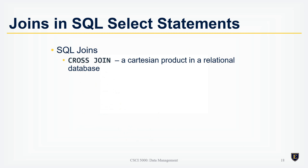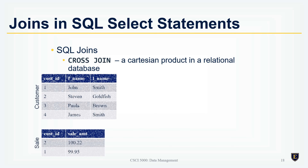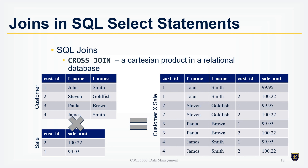The cross join is a Cartesian product in a relational database. We have a customer table and a sale table. Doing a cross join combines all customer information with each sale: John Smith is combined with sale 1 and sale 2; Stephen Goldfish with 1 and 2; Paula Brown with 1 and 2; James Smith with 1 and 2. Four rows times two rows gives us eight records in the result set.